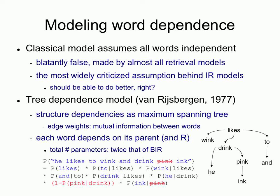The same applies for all other words. The word 'pink' doesn't occur in the document, so its Bernoulli variable is zero. Instead of taking P(pink | drink), you take one minus that — the probability that 'pink' doesn't occur, given that 'drink' does occur, because 'pink' depends on 'drink' and 'drink' did occur. For 'ink,' which depends on 'pink,' since 'pink' didn't occur, you condition on the event that 'pink' didn't occur in this document.